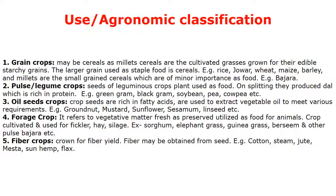Agronomic classification is based on utility. Grain crops include cereals and millets — crops obtained from grasses for their edible starchy grain. The larger grains used as staple food are cereals like Rice, Jowar, Wheat, Maize, Barley, Pearl Millet, Ragi, and other small-grained cereals. An important one is Bajra.